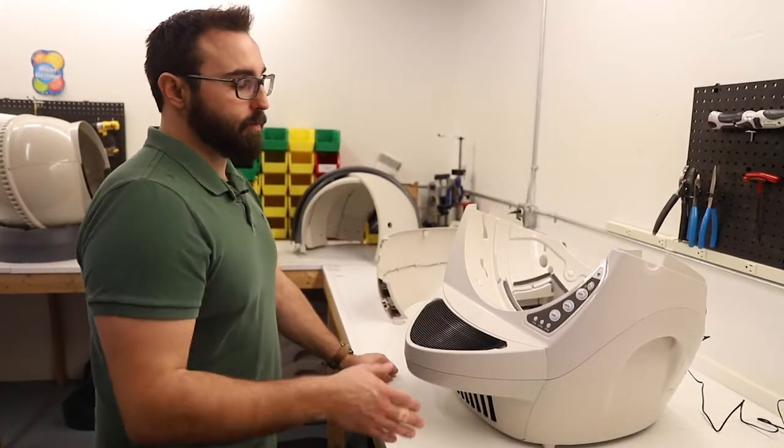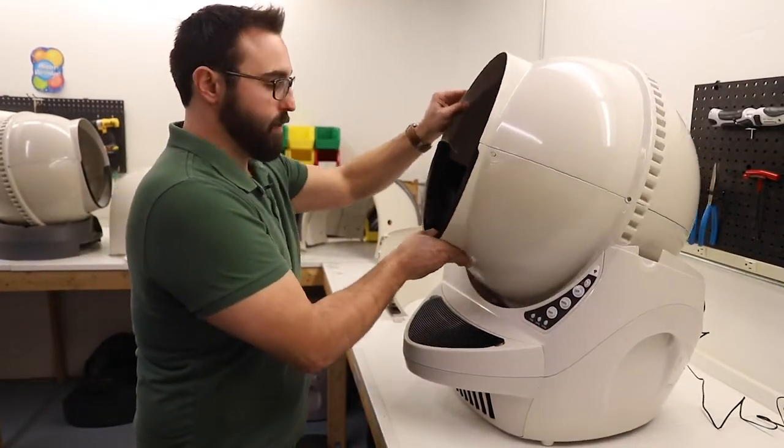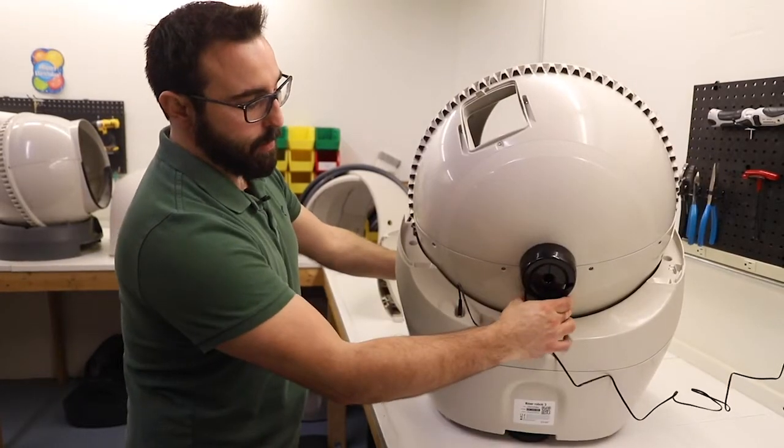Once you've cleared off that lens, you can go ahead and reassemble the unit. You're going to start with putting the globe back in, making sure it seats into its pocket, checking the key in the back.